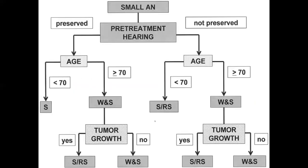Let's study some algorithms. For small vestibular schwannoma with preserved hearing and age less than 70, you can go for surgery. If age is more than 70, wait and watch with surveillance. If there is tumor growth, you can go for stereotactic radiosurgery or surgery. If there is no tumor growth, continue wait and watch. For intracanalicular small tumors less than 1.5 centimetres with normal growth, observe; if growth occurs, go for radiosurgery or surgery.